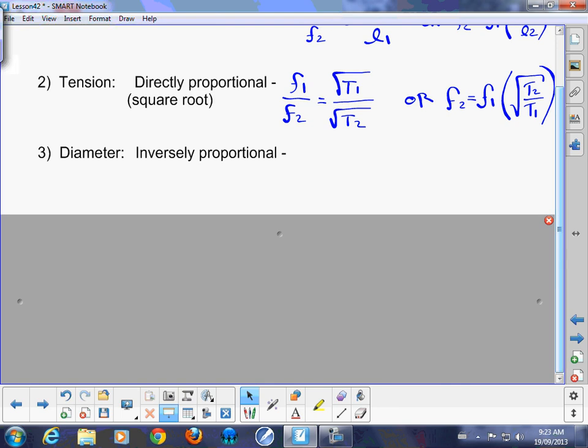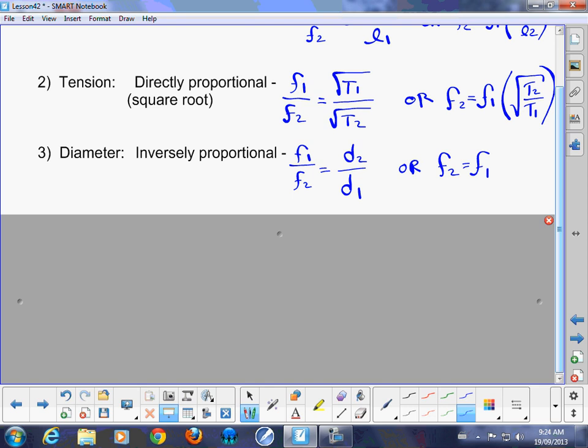So how does the diameter affect it? Well, it too is an inversely proportional relationship, which means that f1 over f2 is equal to the diameter 2 over diameter 1. And if you want to write it in terms of the new frequency versus the old one, it would be d1 divided by d2.